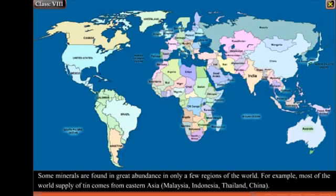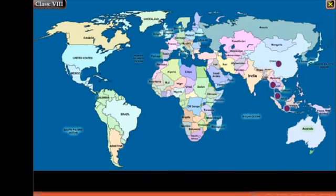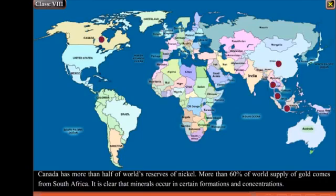Some minerals are found in great abundance in only a few regions of the world. For example, most of the world's supply of tin comes from Eastern Asia — Malaysia, Indonesia, Thailand, and China. Canada has more than half of the world's reserves of nickel. More than 60% of the world's supply of gold comes from South Africa. It is clear that minerals occur in certain formations and concentrations.